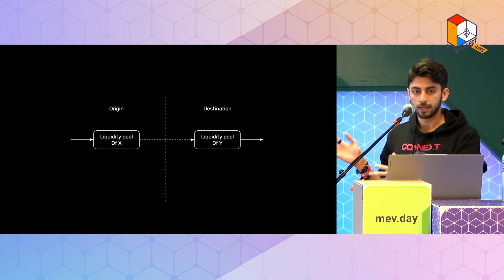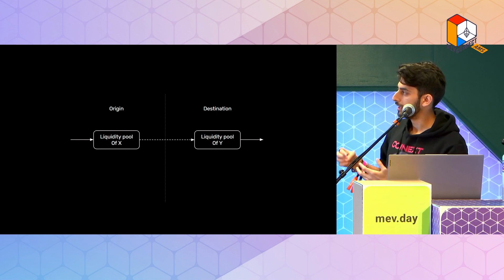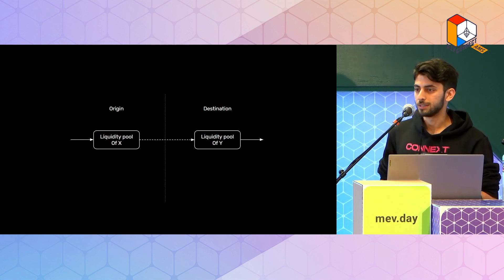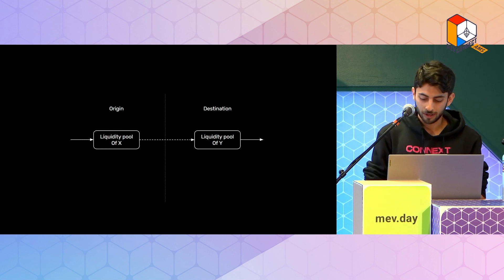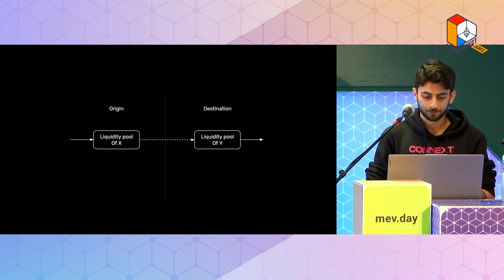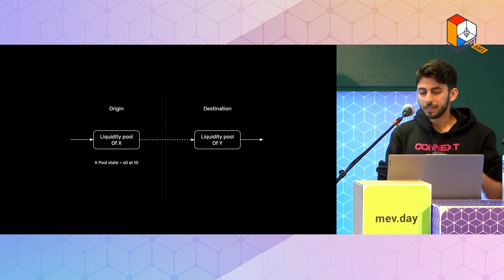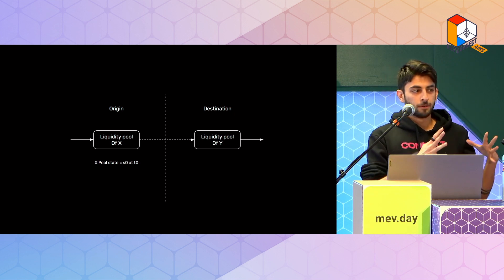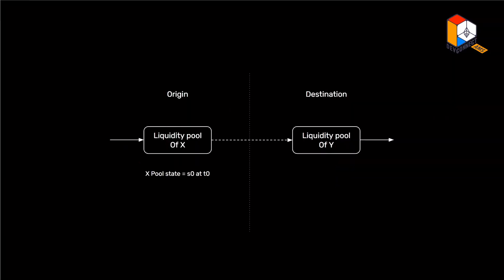But this also has some problems because you're making some very important assumptions about distributed systems and about cross-chain communication, which as we'll see are kind of bad. The big assumption here is that with AMM pricing, you are taking the price or the state of a pool on one chain at a certain time and the state of a pool of another asset at the same time, and using those two things together to determine your price.